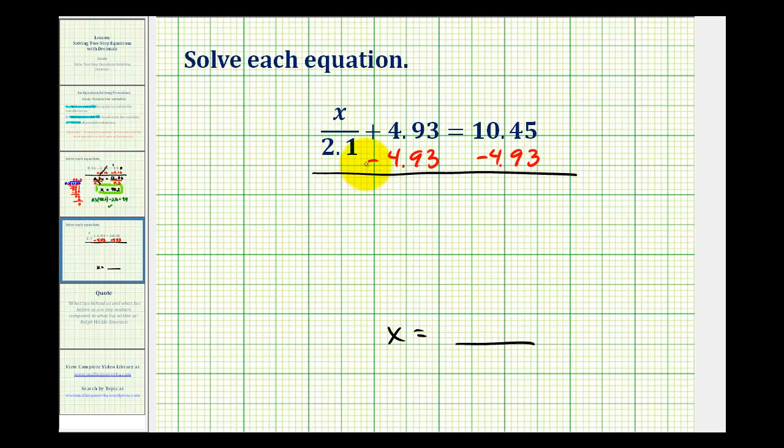So, on the left side, plus 4.93 minus 4.93. That would be 0. So, we have x divided by 2.1 equals this difference. So, we'll bring the decimal point straight down. So, we have x divided by 2.1 and then subtract as we normally would. 5 minus 3 would be 2. Here, we have to borrow. So, we have 14 minus 9. That would be 5. And then, 9 minus 4 is also 5.